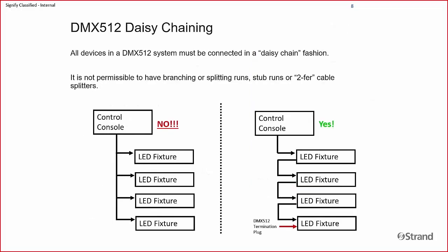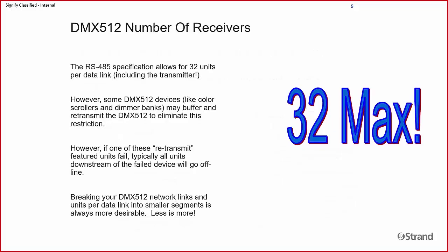You can daisy chain multiple fixtures on one DMX line. You cannot do any sort of T or star configuration the way you might with a network. There is a maximum number of devices that can be on one DMX line — the spec calls for 32 devices. However, I don't know of a single production electrician that will put that many on the line, as it's just not worth the risk. The safe bet is to keep the number of fixtures on one DMX line well below that maximum.